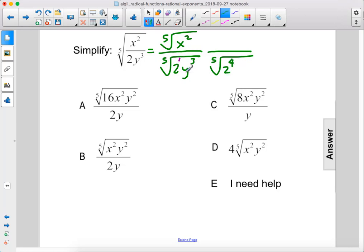We have 2 to the fourth and then here we have y to the third, so we need to put y to the second here so that 3 plus 2 is 5.